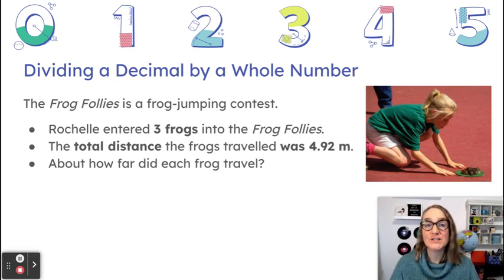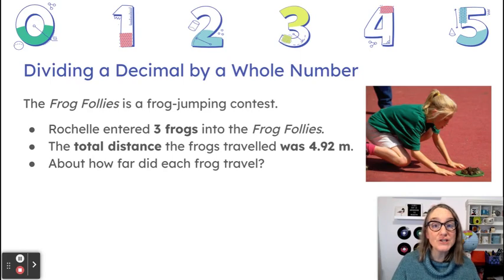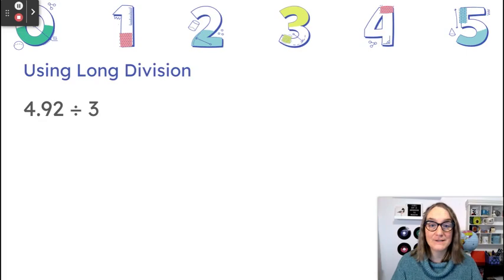Now that I know what the question's asking and what operation I'm going to use to solve it, I need to know the exact numbers that I'm going to have to use in my equation. So I need to know the total distance and I see here in the problem that it is 4.92 meters, and the number of frogs, three. So let's do it.